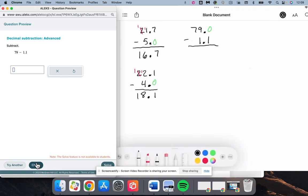We cannot take 1 away from 0, so we need to borrow. That becomes an 8. That becomes a 10. 10 minus 1 is 9. Decimal stays lined up. 8 minus 1 is 7. 7 minus 0 is 7. So 77.9.